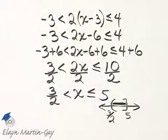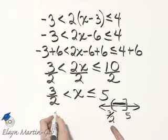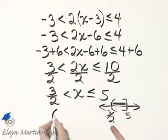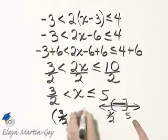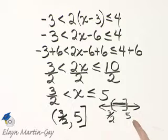Now let's write it in interval notation, just follow the shading from left to right. So I'll have a parenthesis, 3 halves, comma, it's shaded all the way to 5, and then a bracket.